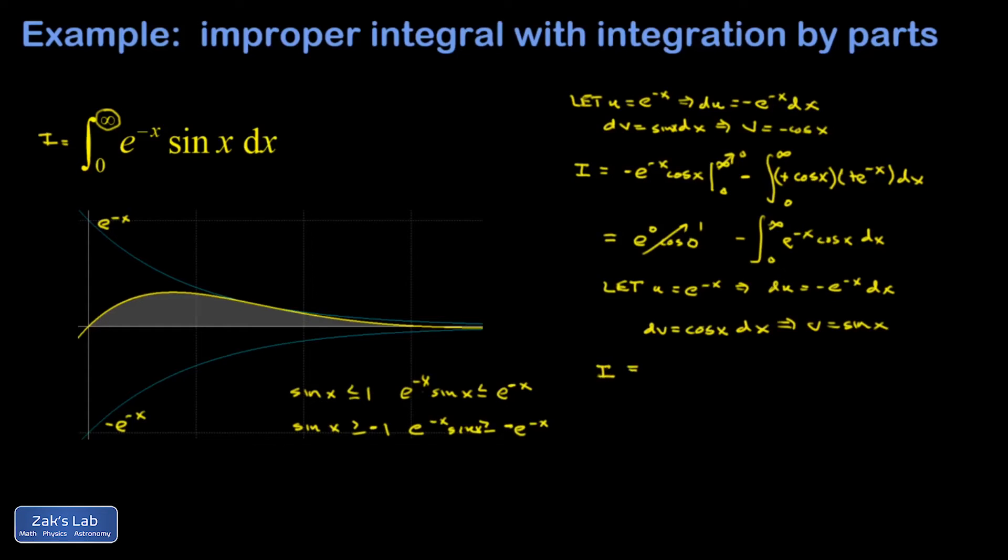Then v must be sin x. So I apply the integration by parts formula again. I've got a 1 hanging out in front, and minus this integral that I just made these substitutions in. So I end up with uv, that's e^(-x) sin x evaluated from 0 to ∞, minus the integral from 0 to ∞ of v du, which is sin x, and du is going to be a negative, so I'll pull that up front: e^(-x).